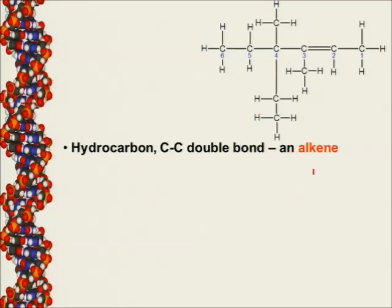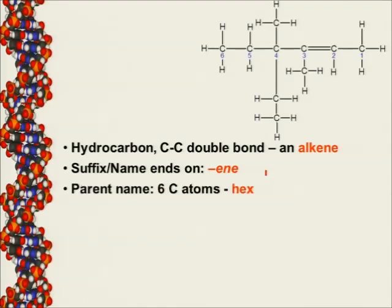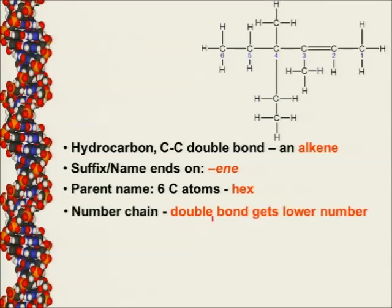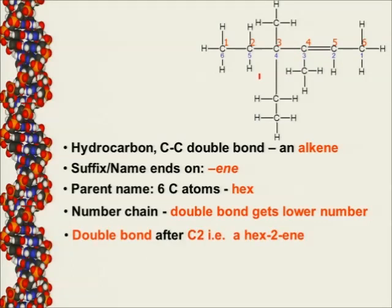This compound has a double bond, so it belongs to the homologous series of the alkene. Therefore my suffix will end with '-ene'. It has six carbons, so for six carbons my parent name would have 'hex'. I've got a double bond after carbon number two — that's my lower number — so the parent name will be hex-2-ene.